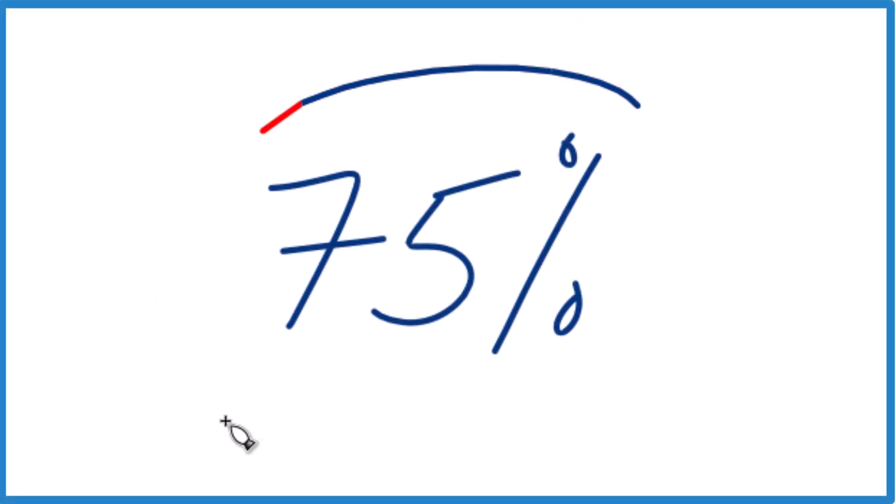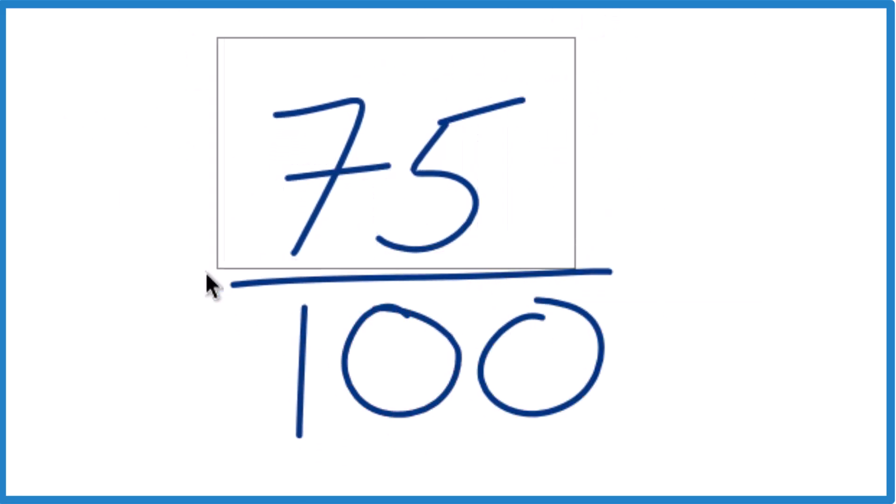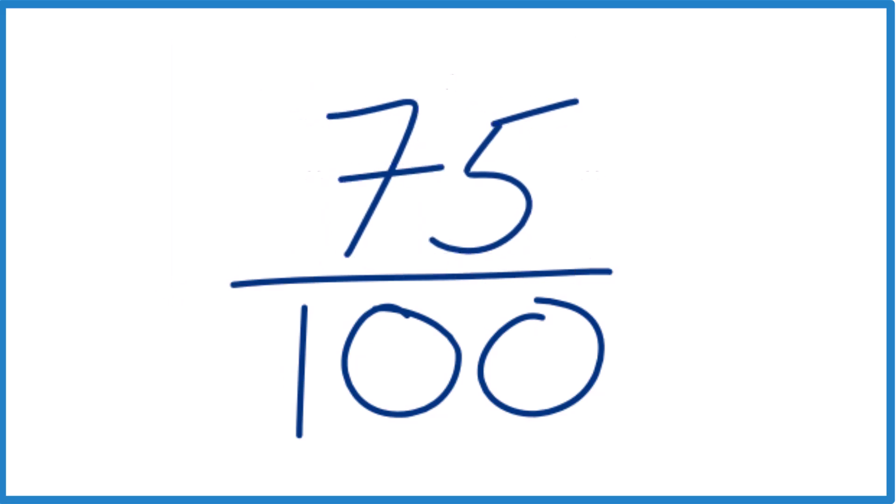So let's take 75% here and write it as a fraction and as a decimal. The first thing that we need to know is that percent means per 100 or over 100. So we get rid of that and we have 75 over 100. That's a fraction.